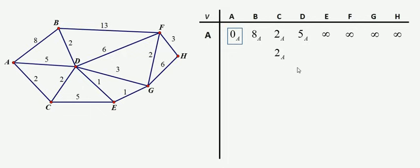So I'm going to copy that down to the next row, and I'm going to put a box around it, because now I don't have to think about C as a destination anymore. I've got the shortest path from A to C.